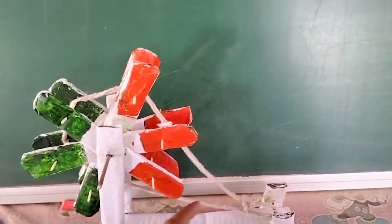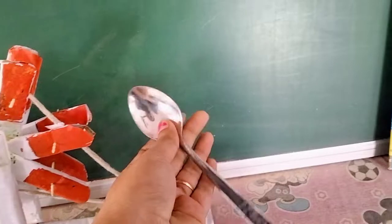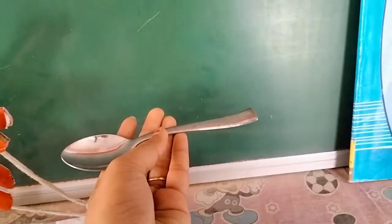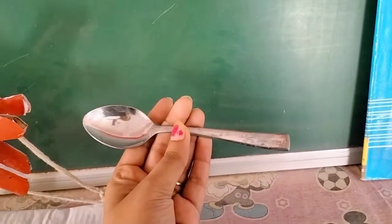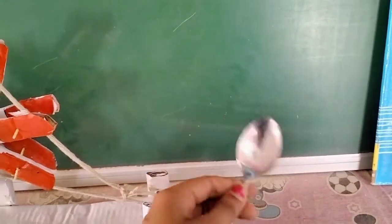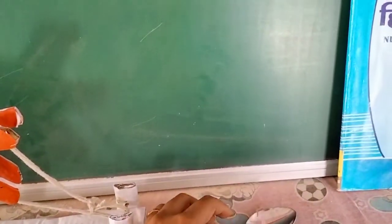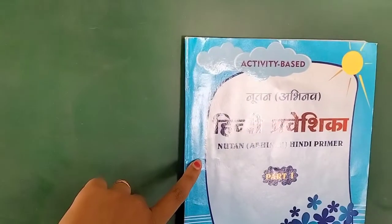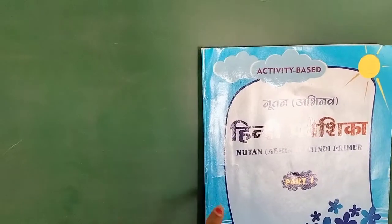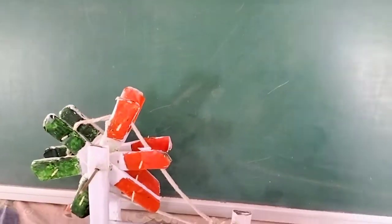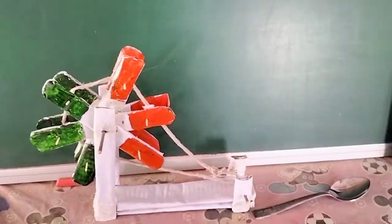तो च से चर्खा, फिर ये क्या है? च से चम्मच। तो आपको पता चला, ये हिंदी प्रवेशिका की बुख है। उसमें आज हम वियंजन चलन करेंगे।